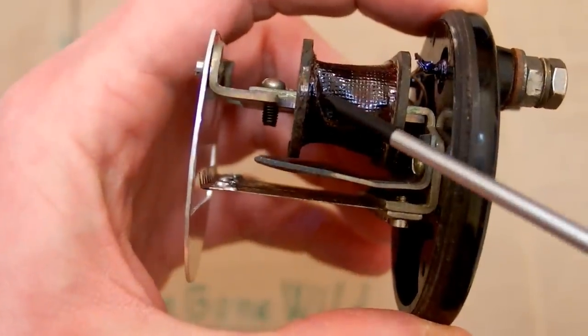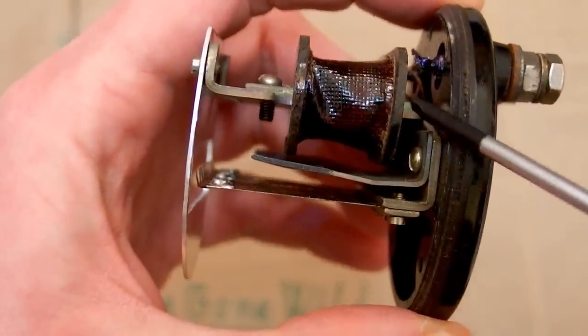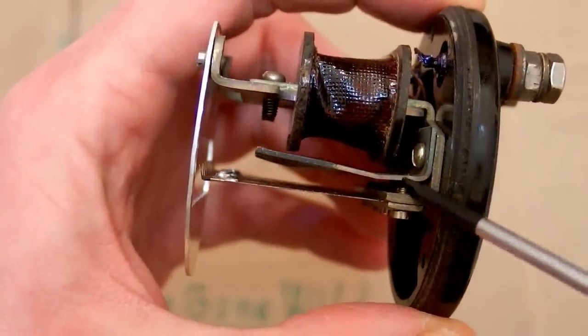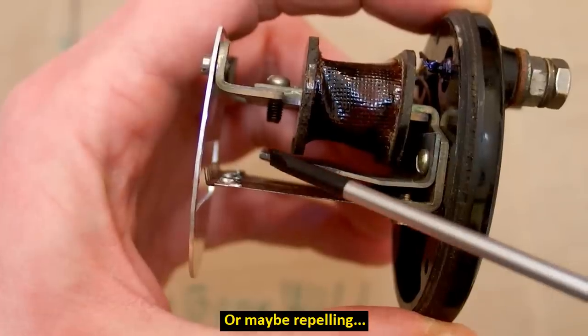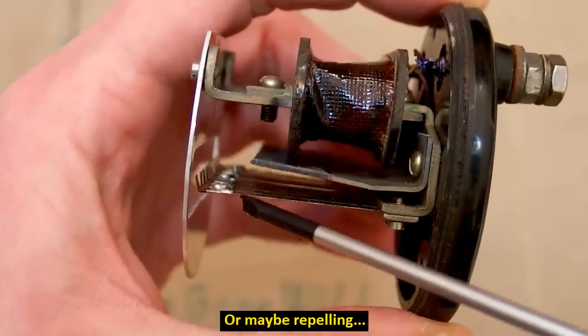And basically this coil is producing a magnetic field. And it goes from here into those bars attracting those reeds.